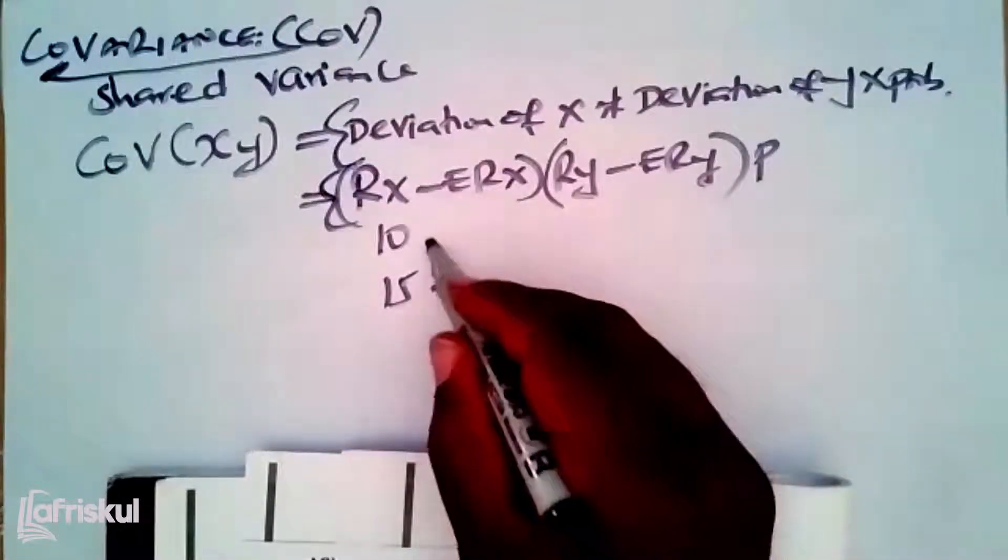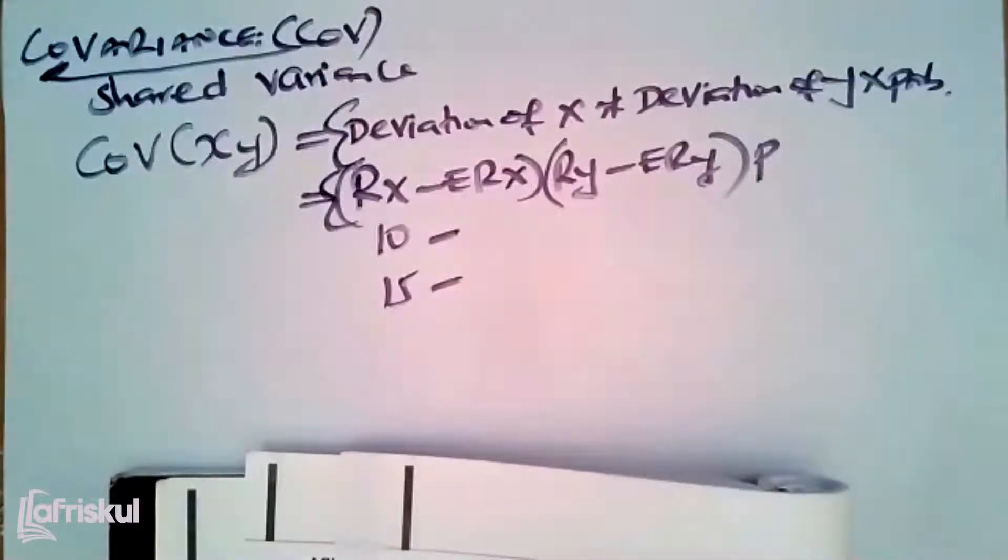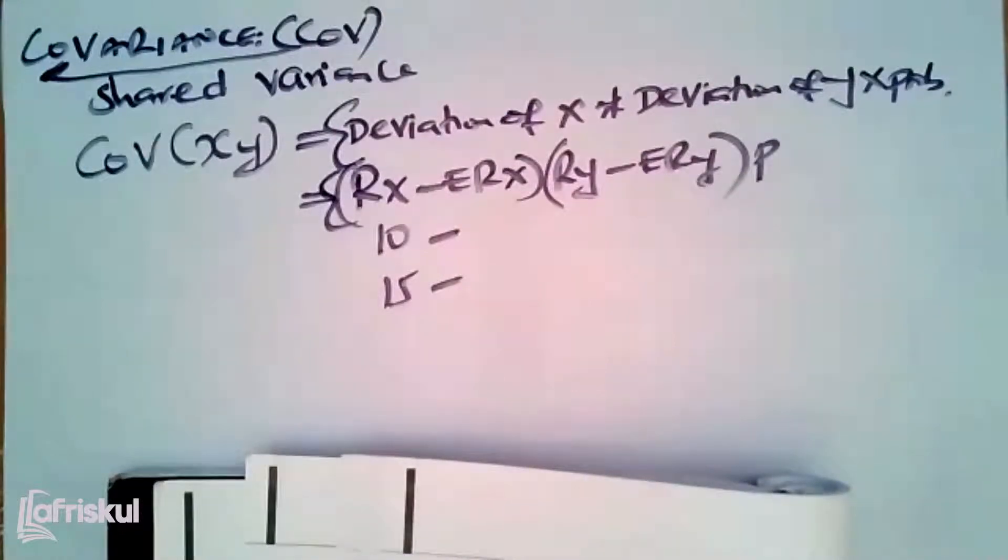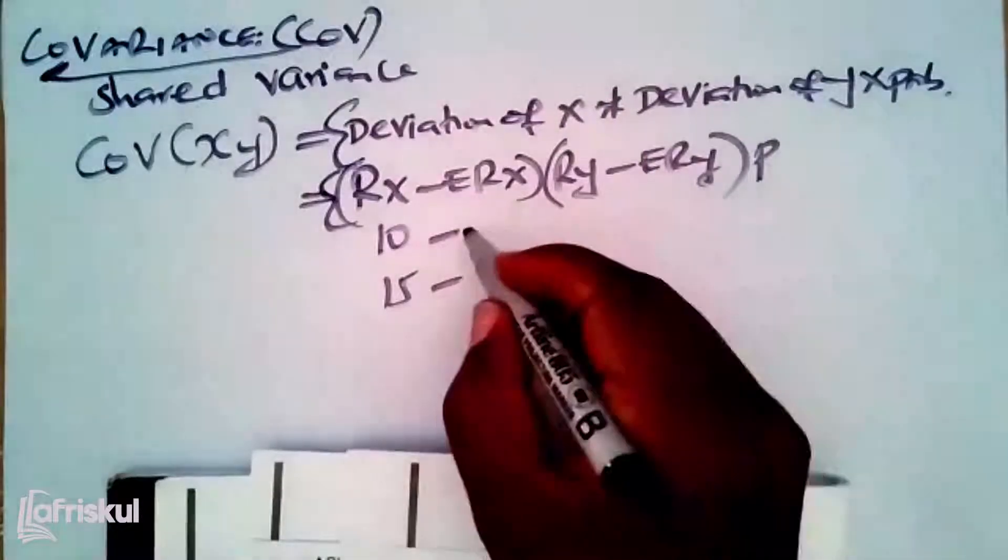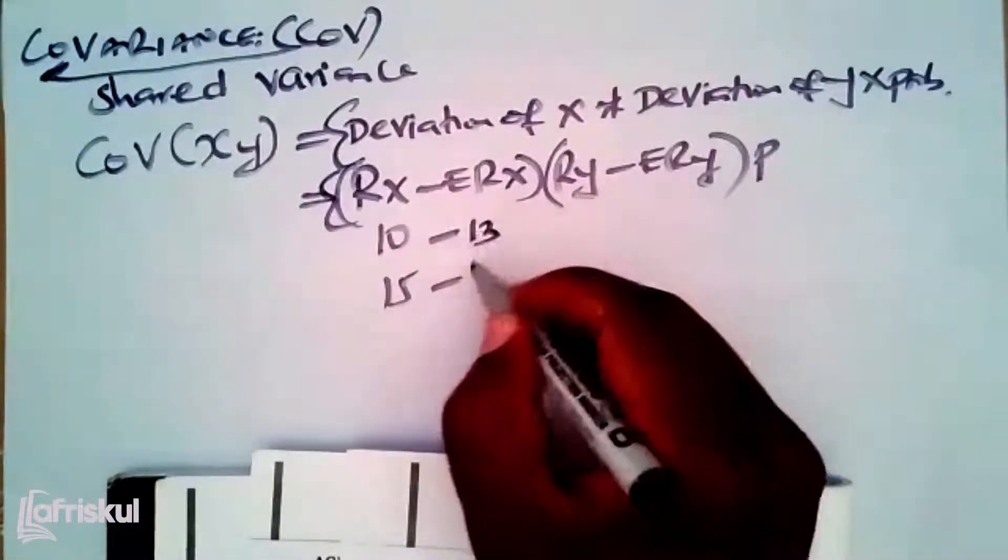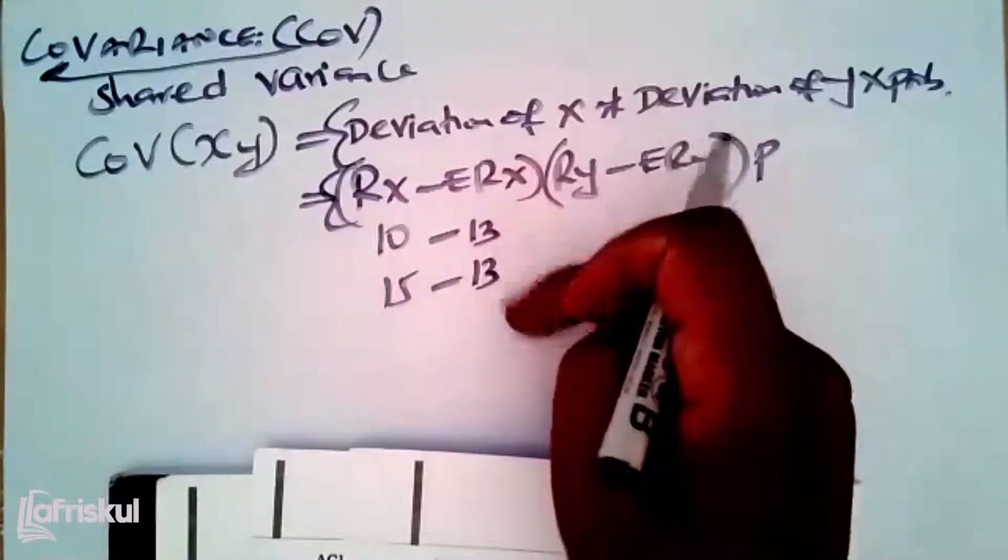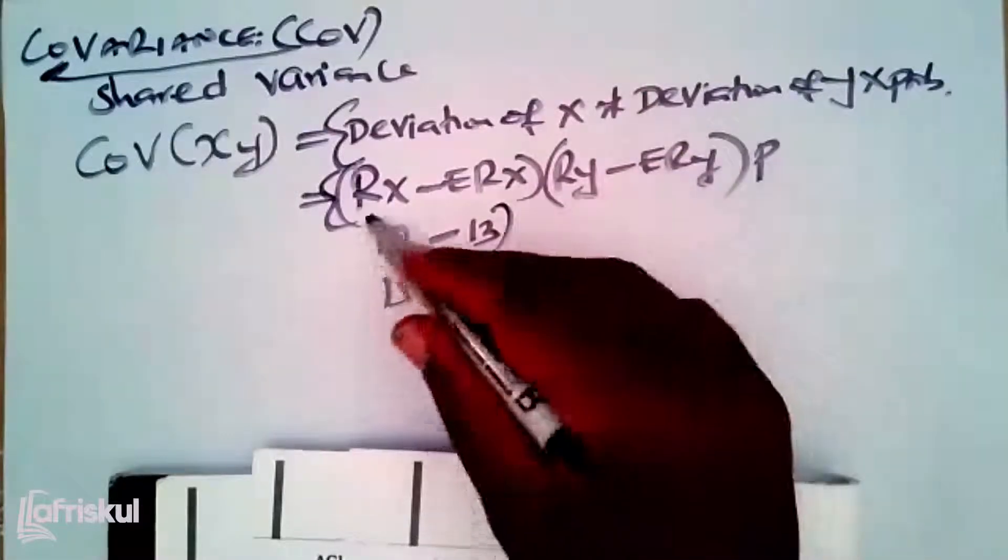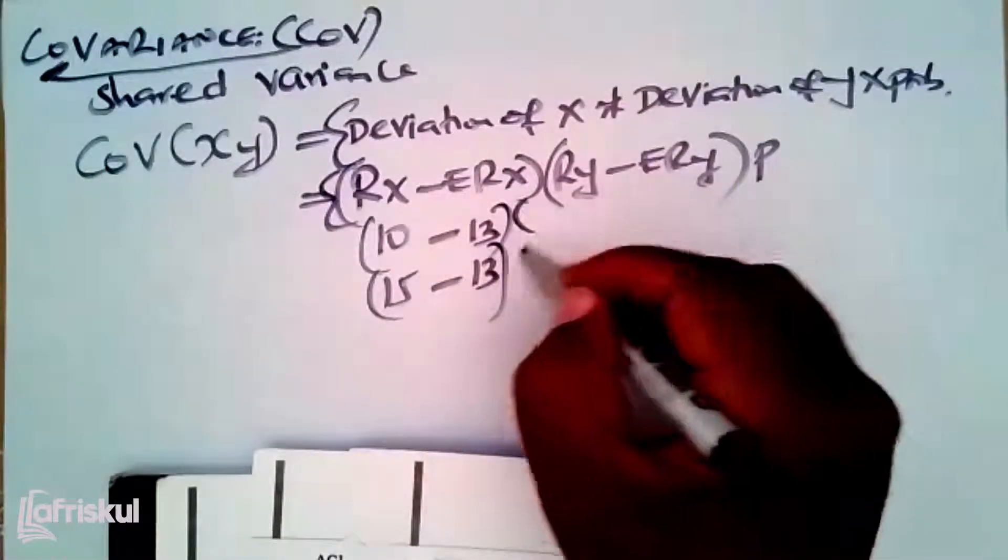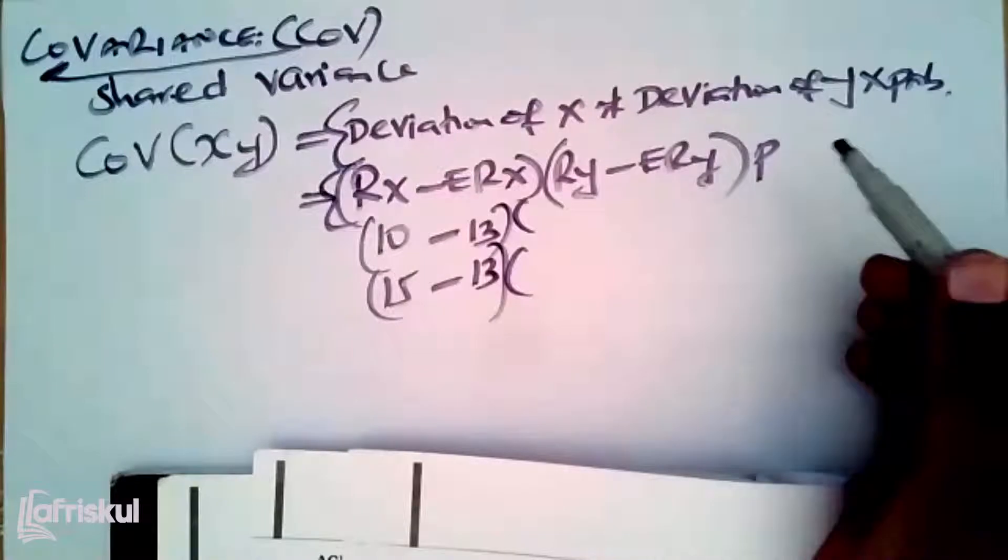Minus expected returns of x - you are the ones who gave me expected returns of x from number one above. Expected return of x, we found a figure of 13. So expected return doesn't keep on dancing between the outcomes. Expected returns, regardless of the actual outcome here, expected return will be the same.